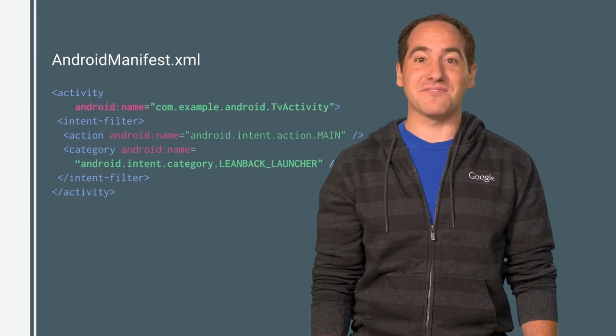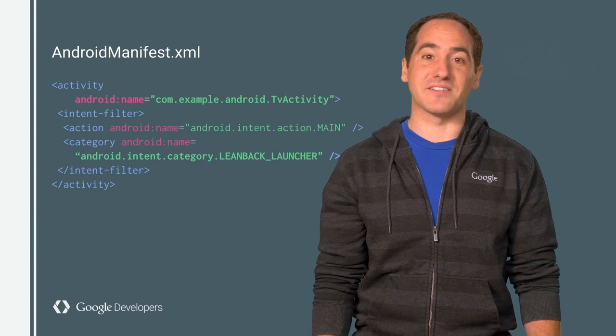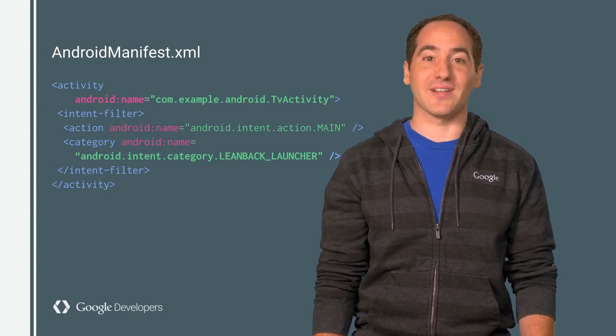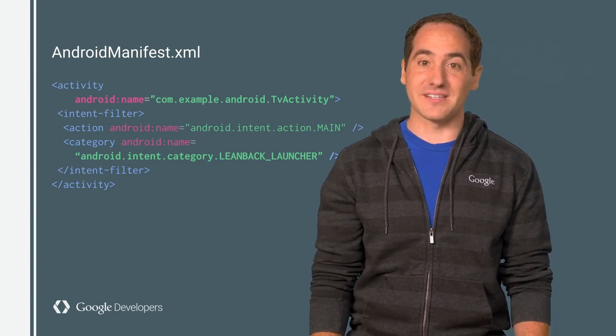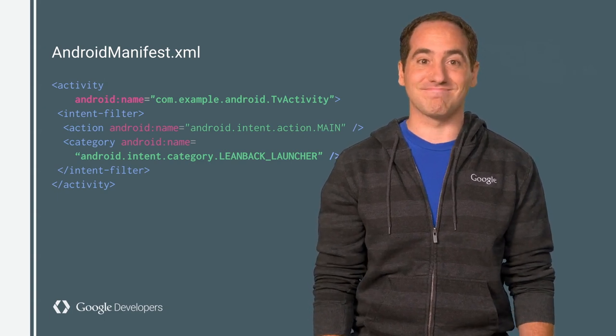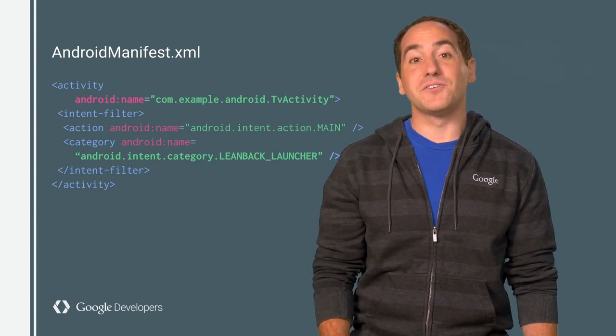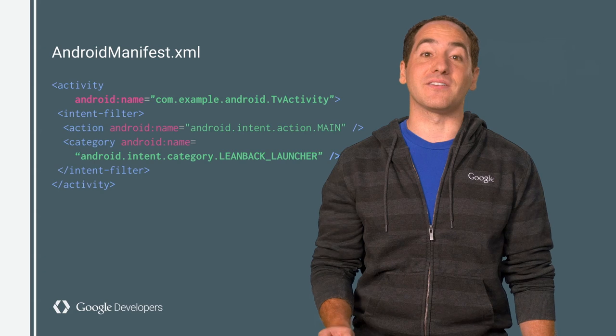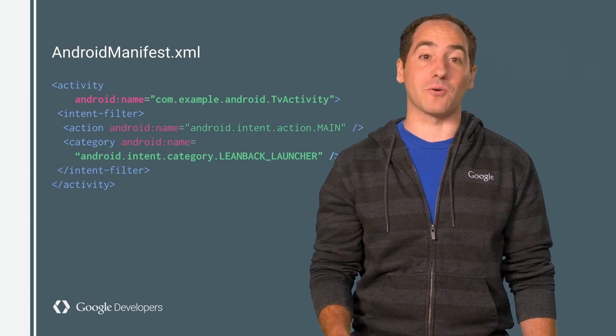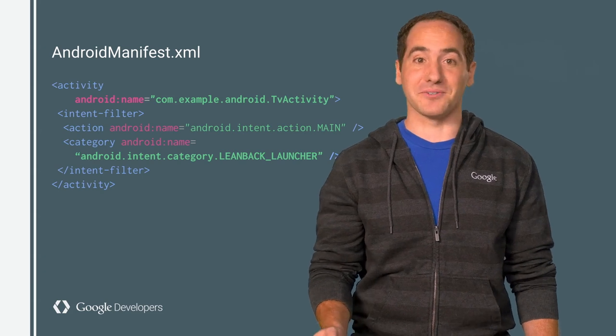Start by specifying the activity that's launched when the user selects your app on the TV home screen. Do so by adding the Leanback Launcher category to an intent filter. Having this category also lets the Play Store know that your app is compatible with Android TV.